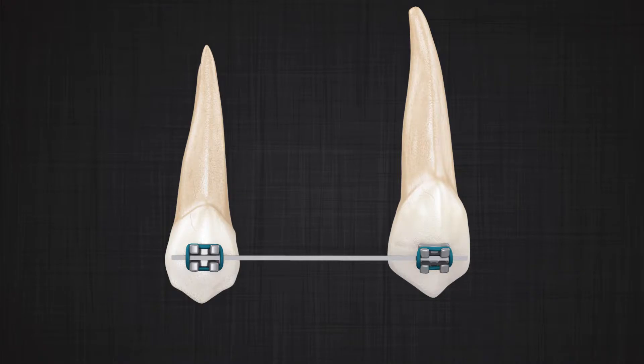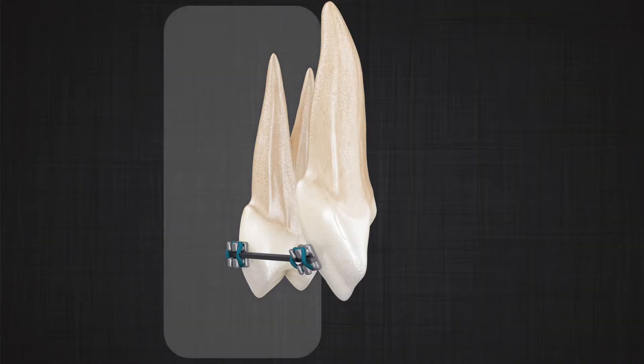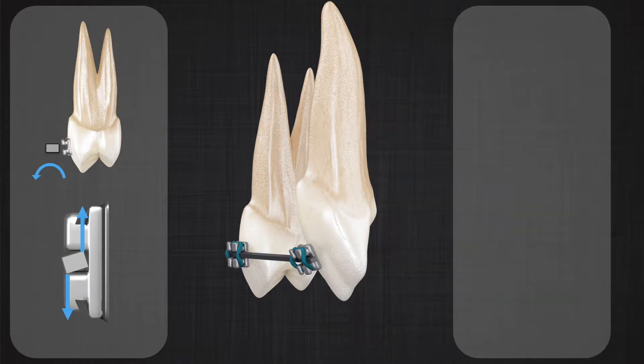Last time we discussed the flexible round wire. What happens if we have a piece of rectangular wire? If the rectangular wire is straight but twisted due to the angulation of the brackets in the third-order view — in other words, in the third-order view the two brackets are not completely aligned — one of them causes a twist inside the wire.